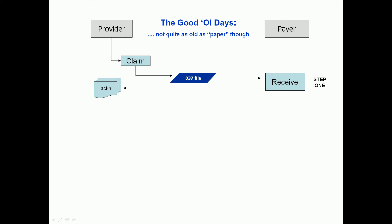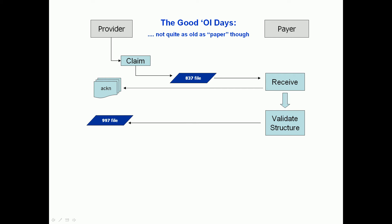Once they've received the file, they have to verify whether or not it can be processed, so it goes through a structure validation process. The results of that validation are communicated on another file called a 997 — a functional acknowledgement file that says yes, we can process this file, it is structurally correct, or alternatively, your file is not structurally correct so we are rejecting the file. That's your step two.